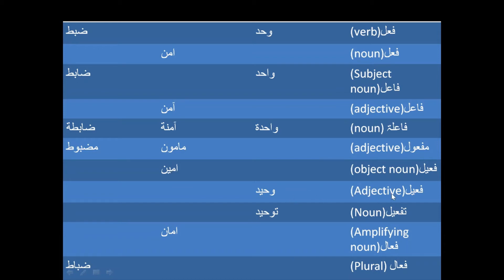On the Fi'al scale, we have the variation Wahid - meaning unified, united, one, that kind of concept. Then we have the Taf'il scale, and from Wahad we get Tawheed.